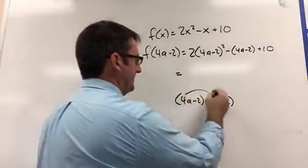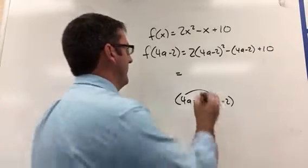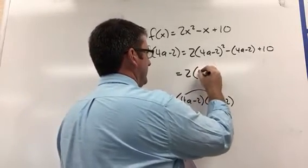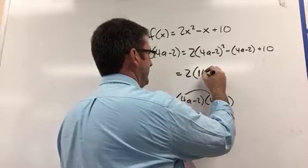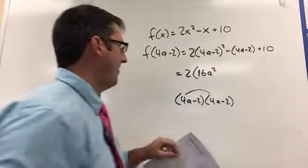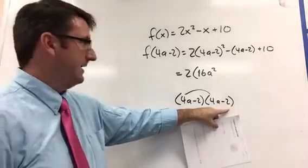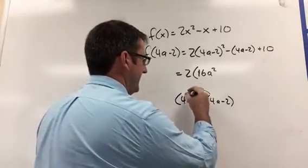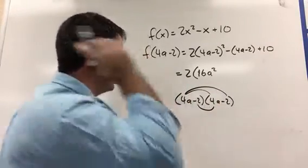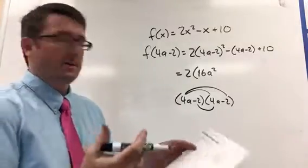So when we FOIL that, we're going to get 4a times 4a is going to be 16a squared. 4a times negative 2 is negative 8a. But then we're going to do that here and then here. We're going to get negative 8a. So add those